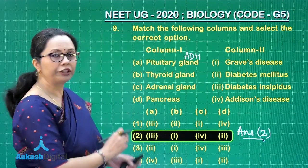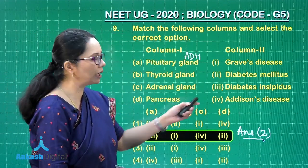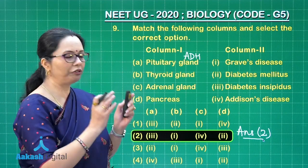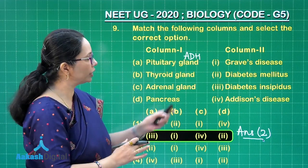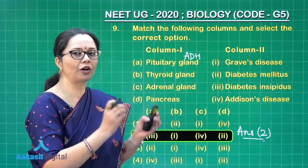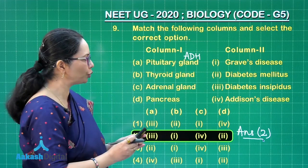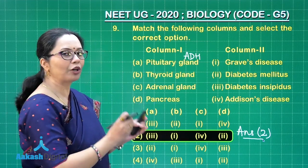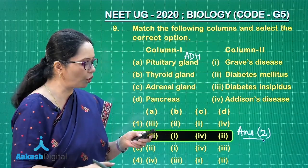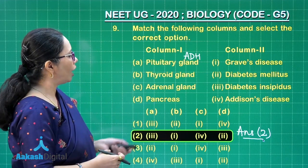This was an interesting question — both diabetes mellitus and diabetes insipidus were given. One should be very clear: insipidus is so named because the urine is insipid, meaning tasteless, without sugar, because it is simply due to the lack of ADH causing excess water to be passed out.